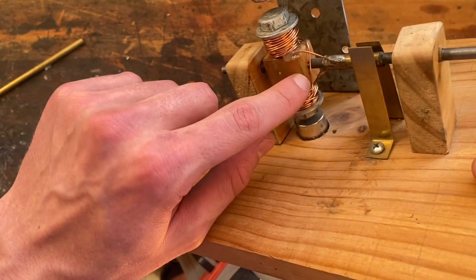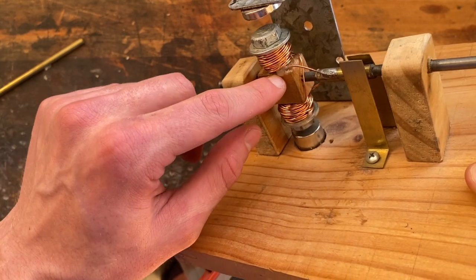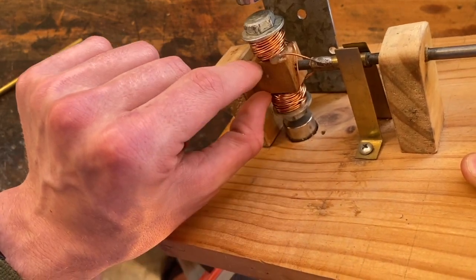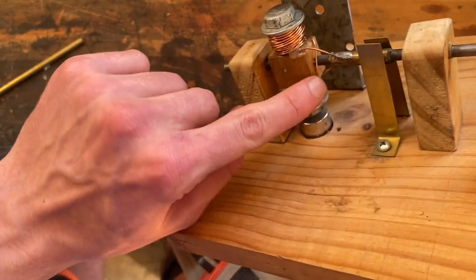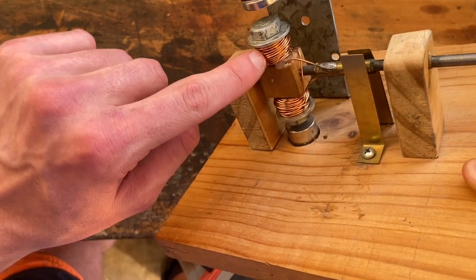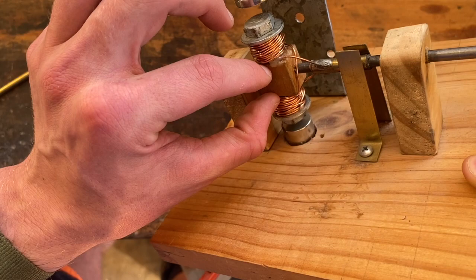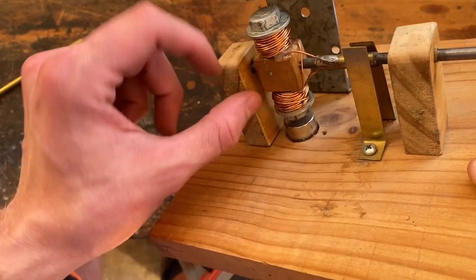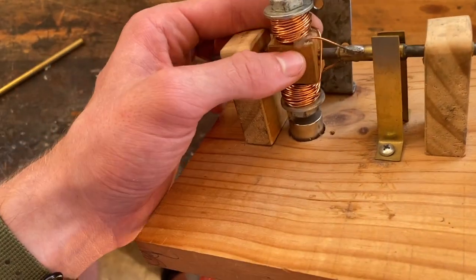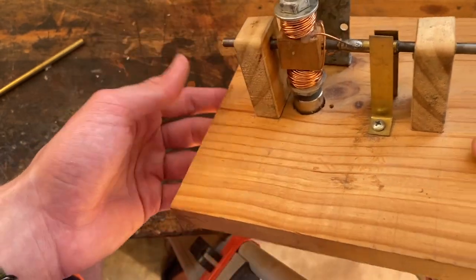I attached the armature onto the shaft with just this little block of timber. Drilled a hole through there for the shaft and a hole through there for both bolts to go in. I then hot glued all of that together and a bit of hot glue to secure the wire from unraveling.